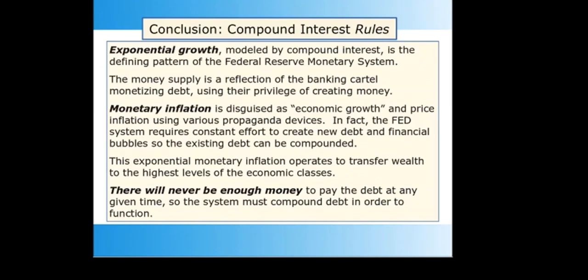Conclusion: exponential growth modeled by compound interest is the defining pattern of the Federal Reserve monetary system. The money supply is a reflection of credit issued by the banking cartel using their privilege of creating money. Economic growth is a term to describe monetary inflation in a favorable light, but in fact this growth is simply the constant effort to compound debt by justifying new loans and creating financial bubbles. There will never be enough money to pay the debt at any given time, so the system must maintain exponential growth by compounding debt in order to function.